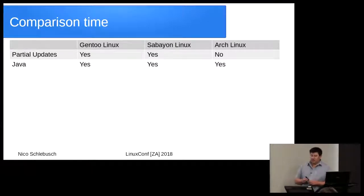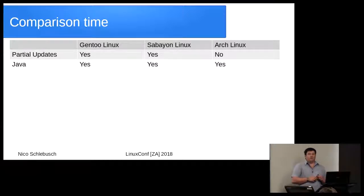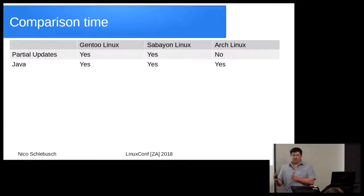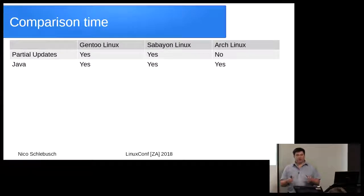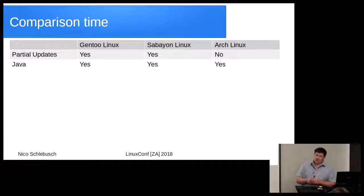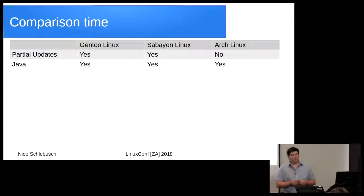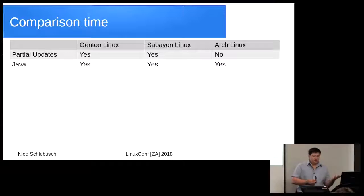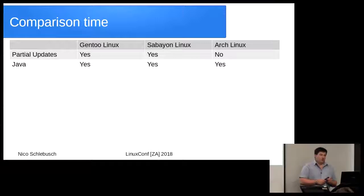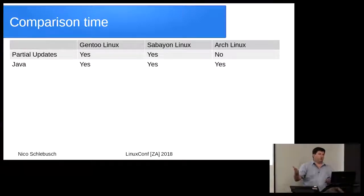Partial updates — this is a big no in Arch Linux. If you install what's available from the package repositories, you should never have a partial update. If something breaks halfway you can redo it. On Gentoo and Sabayon, if something breaks, it's rather easy to just recompile that package from source code — whereas on Arch Linux you have to wait for the upstream maintainers to recompile. On Gentoo you have the capability to recompile immediately and fix any problems.